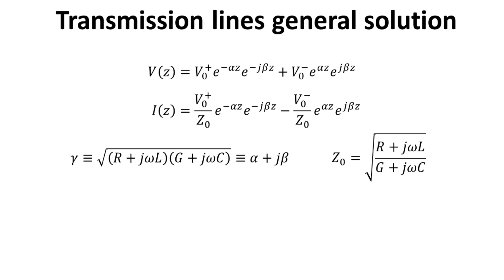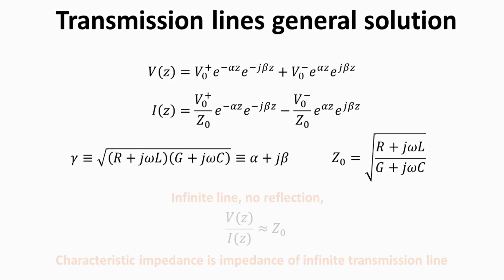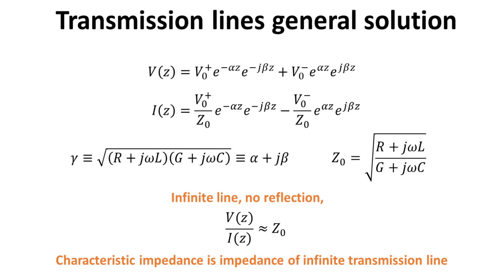Before we proceed, let's remark on the meaning of the characteristic impedance Z0. If the transmission line is infinite in length, then the reflected wave will be zero, as required by the attenuation factor alpha. Thus, the ratio of the voltage to the current at any point along the transmission line will then be exactly equal to Z0. Z0 is therefore the impedance of an infinite transmission line.